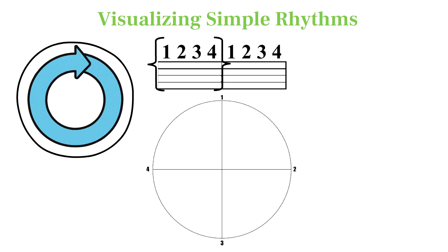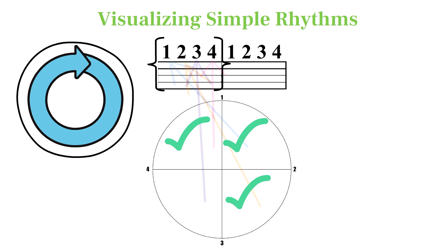We can visualize this as a circle representing the entire measure that's cut into four equal parts representing the four quarter notes. Instead of drawing lines between sounding notes, for rhythm it seems more valuable to mark the pieces of the circle that sound and to leave the rests unmarked.